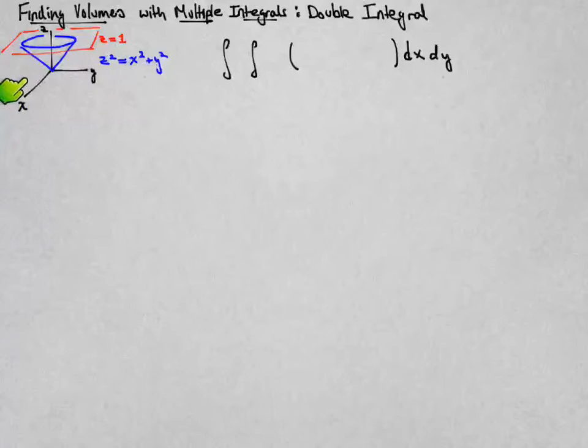I'm just going to look at the portion of that surface sitting above the xy plane, so when z is greater than zero, and then we're going to cut it off at z equal to 1, and we want to find the volume between the xy plane and z equal 1 enclosed by that blue cone.